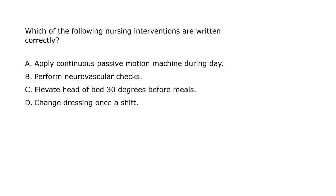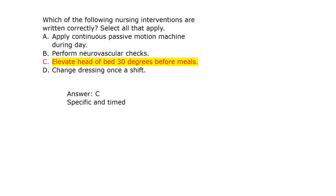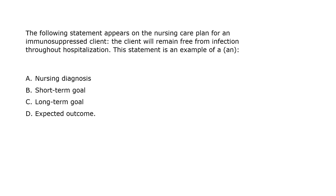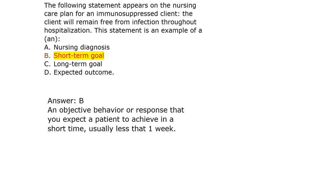Which nursing intervention is written correctly? A. Apply continuous passive motion machine during day. B. Perform neurovascular checks. C. Elevate head of bed 30 degrees before meals. D. Change once a shift. Answer C: Elevate head of bed 30 degrees before meals — specific and timed. The following statement appears on the nursing care plan for an immunosuppressed client: 'The client will remain free from infection throughout hospitalization.' This statement is an example of a short-term goal — an objective behavior or response expected to be achieved in a short time, usually less than one week.